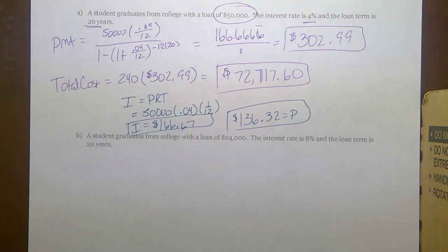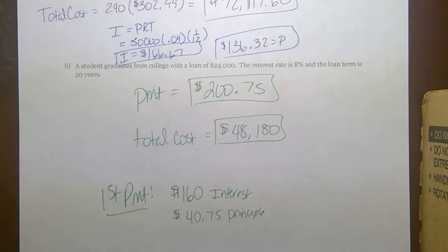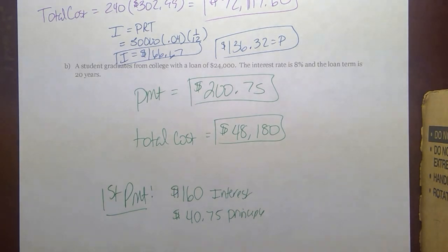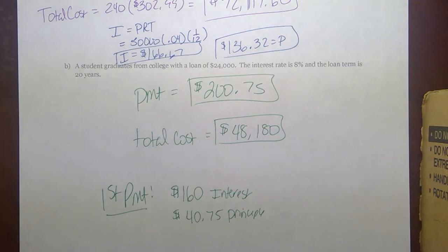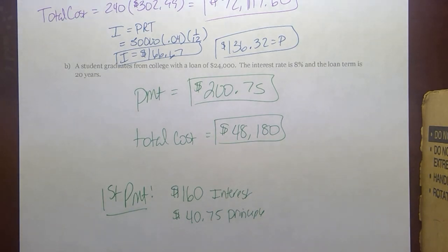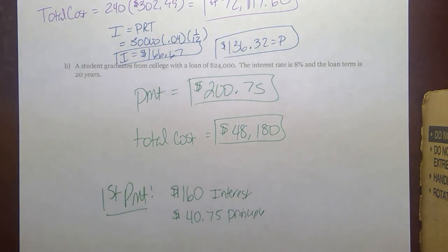Pause your video to work out the next student, then check your answers. This student graduates with $24,000 in loans at 8% interest — double the rate — same 20-year term. Even though they borrowed half the amount with double the interest rate, they end up paying back $48,180 with monthly payments of $200.75. For that first monthly payment, $160 goes to interest and very little to principal. As you pay the principal down, the balance shifts — the faster you can apply more money to principal each month, the better off you are.